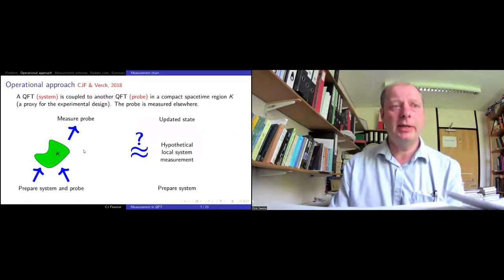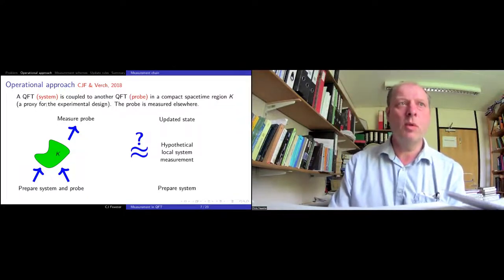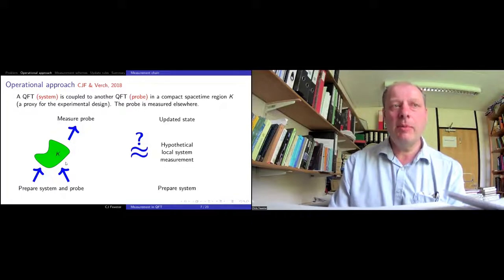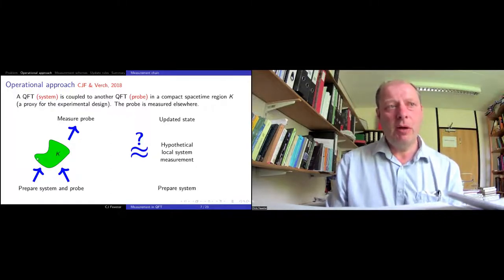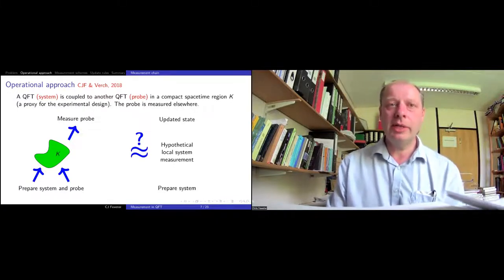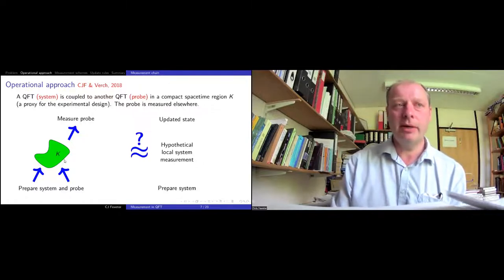The idea is that you have things called measurement schemes, which describe how system observables can be measured by making suitable measurements of the probe. State update rules are called instruments in this approach — they're a bit like Krauss operators some of you will come across in quantum information theory. These give you the update rules. The situation when we started was that this whole field of quantum measurement had hardly been applied in quantum field theory — there were a couple of papers, but not really very much at all.